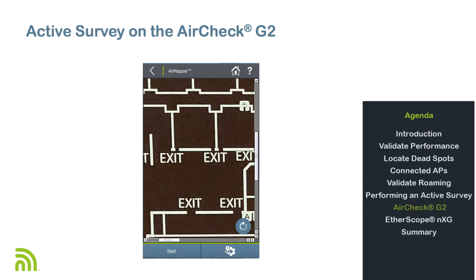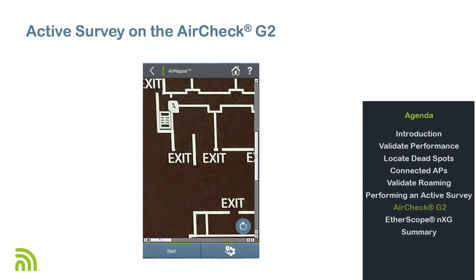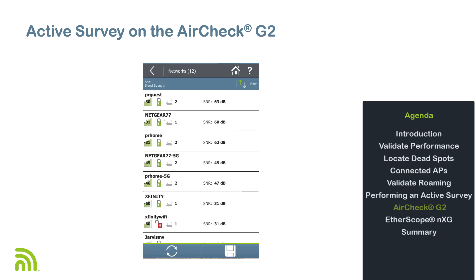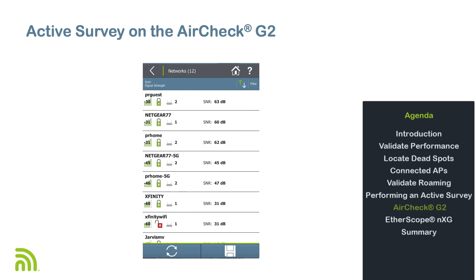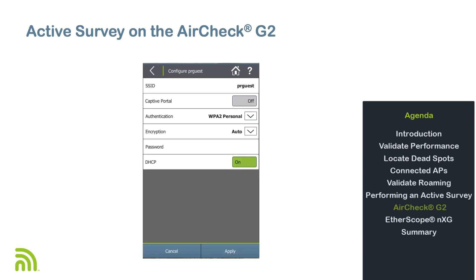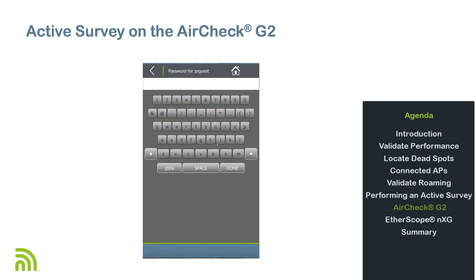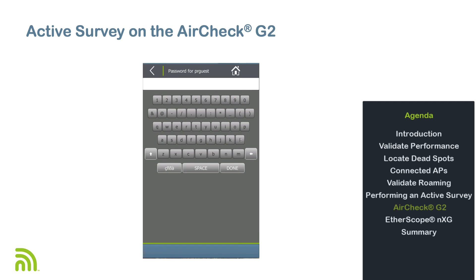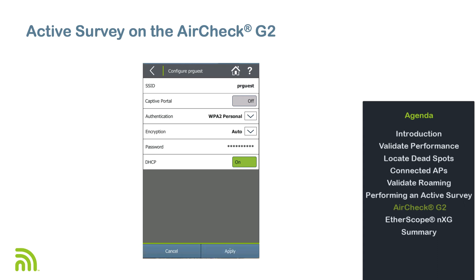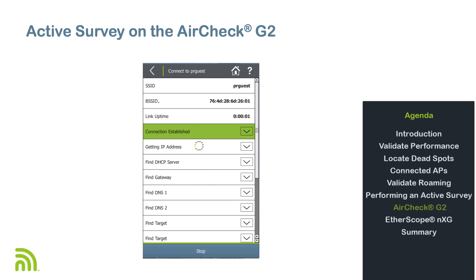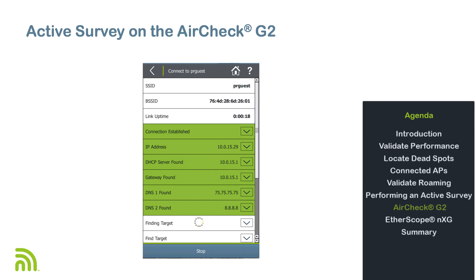I'm ready to begin the survey. I walk to the location where I will begin and tap Start. Since I'm performing an active survey, I will need to select a network. Once I select a network, the network configuration screen will appear. It is here where I enter the credentials needed to connect to the network. Once I've provided the required information, I'll tap Apply. The AirCheck G2 will connect to the selected network, and the progress is displayed on the screen.